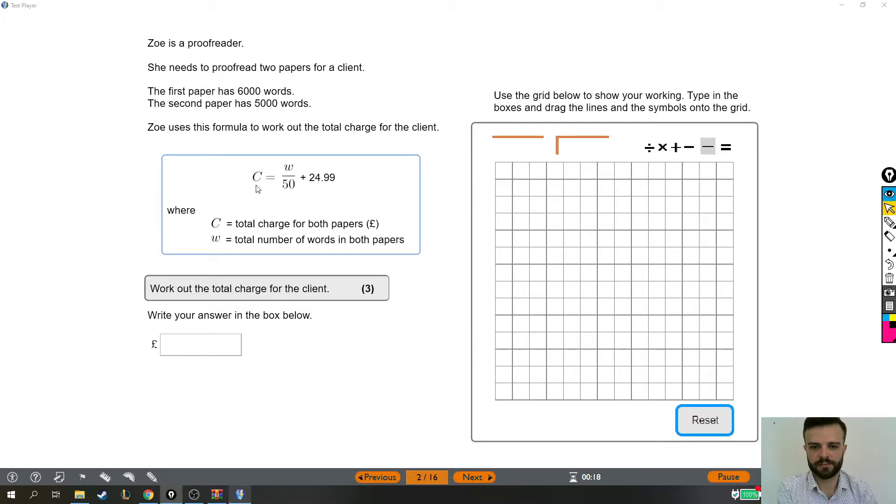All right, so here we have a question that the first thing that stands out to me is this slightly scary looking formula, but we'll soon see that it's not as bad as it looks. So let's give it a read. Zoe is a proofreader. She needs to proofread two papers for a client. The first paper has 6,000 words and the second paper has 5,000 words. Zoe uses this formula to work out the total charge for the client.